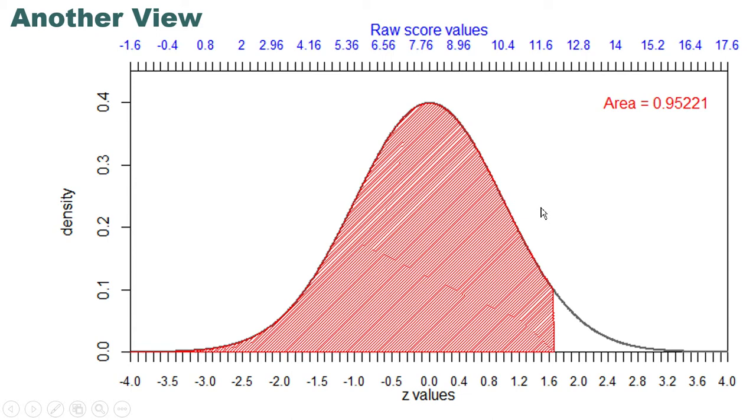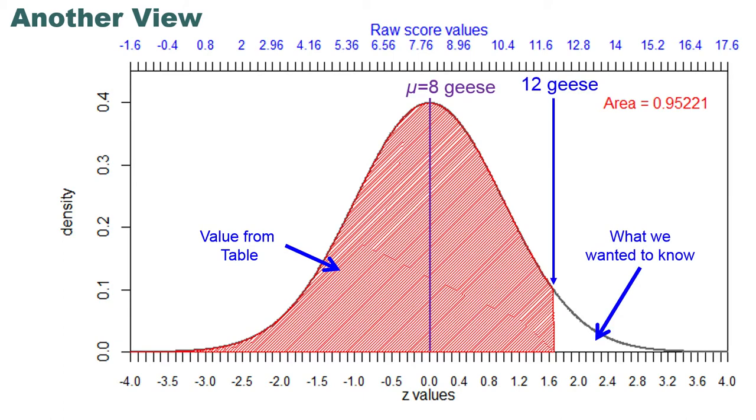Actually, it's a little different from the table because the computer is more precise than the table is going to be. That level of precision doesn't matter. It's close enough. Plus, we're estimating anyway. We're assuming that the distribution of number of geese flying south is perfectly normal. It's probably not perfectly normal, so we're off to some extent anyway. So I'm not going to care about whether it's .9545 or .95221. You get about this, and you take 1 minus that because what we're really looking for is the area of this tail, and that's our estimate of the proportion of geese.